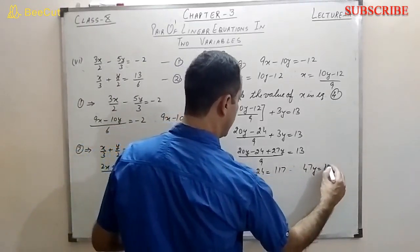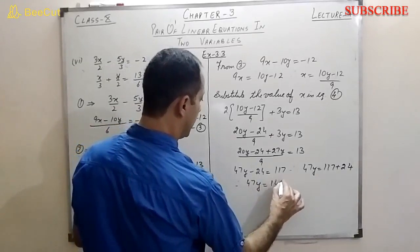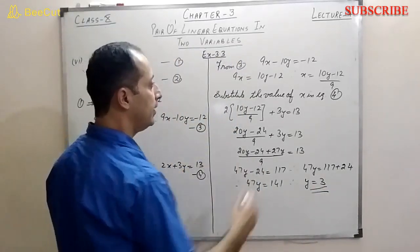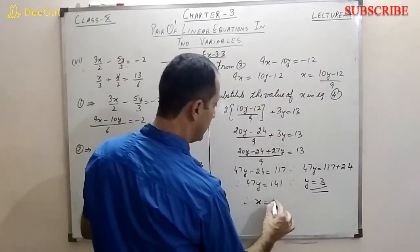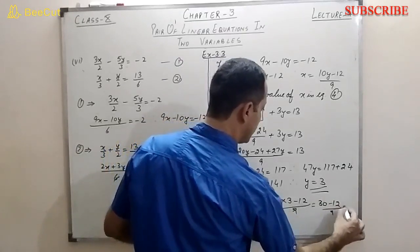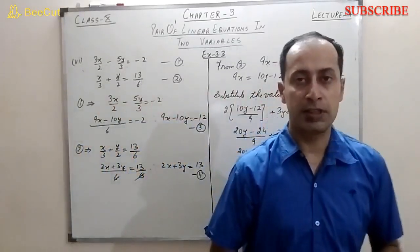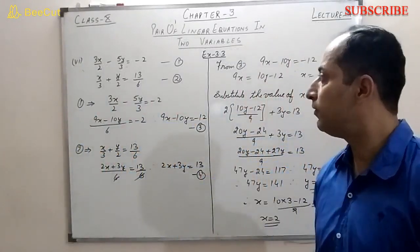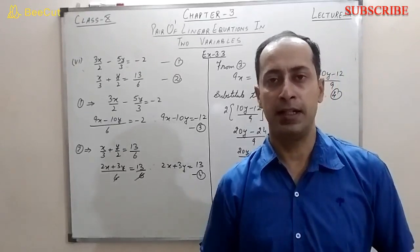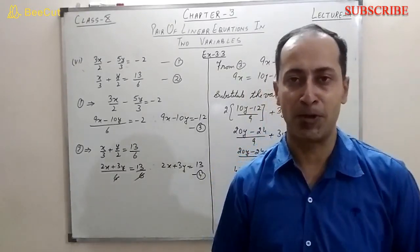Therefore y equals 141 by 47 equals 3. Substituting y equals 3 into x equals (10y minus 12) by 9: x equals (30 minus 12) by 9 equals 18 by 9 equals 2. So x equals 2 and y equals 3. That covers the substitution method and the first question of Exercise 3.3. The remaining statement questions will be in subsequent lectures. Hope you understood — like and subscribe. Goodbye and take care!